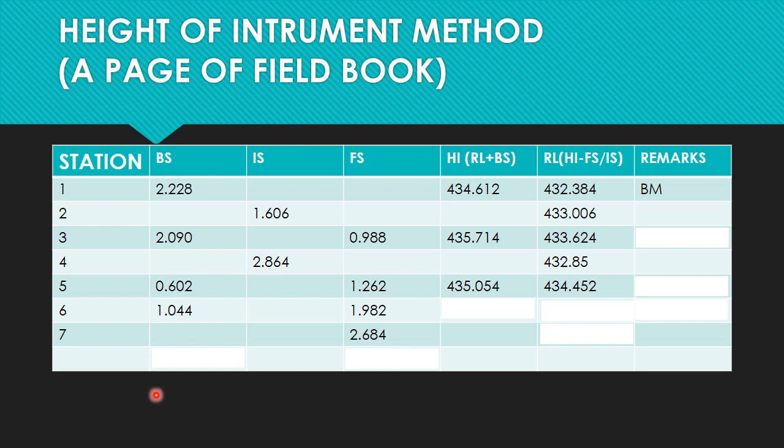The reduced level for the next station is the height of instrument 435.054 minus the foresight 1.982, which gives a reduced level of 433.072. The new height of the instrument equals the reduced level 433.072 plus the back sight 1.044, which gives us a new height of instrument of 434.116.